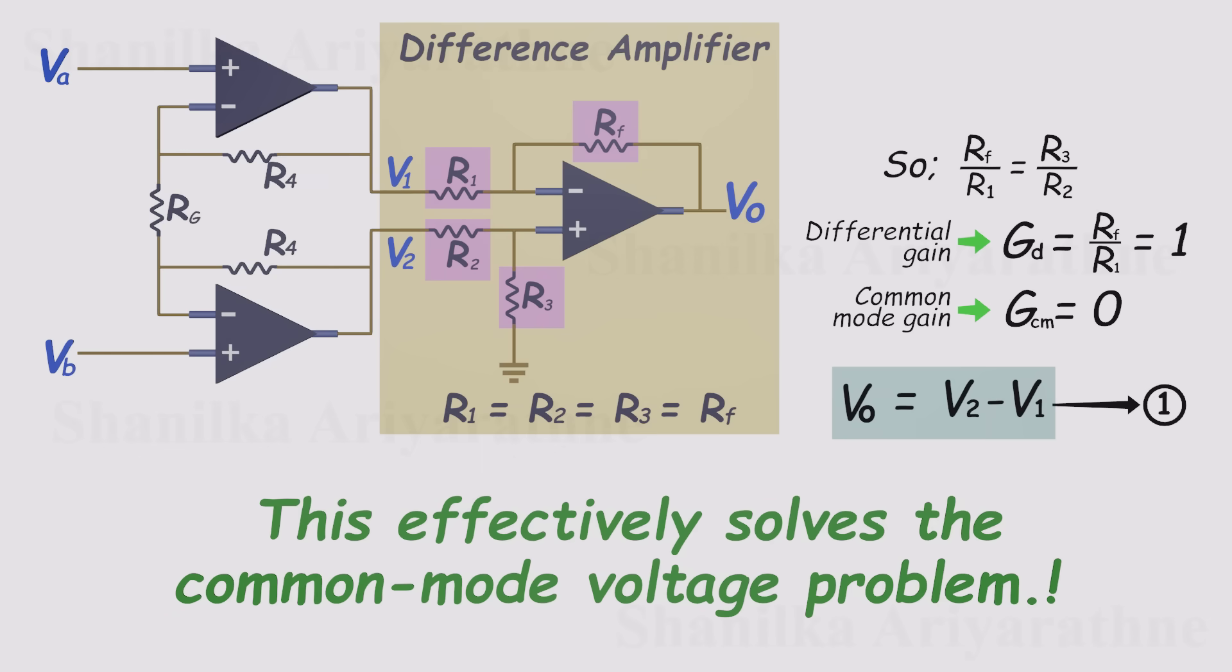The real advantage here is precision. In commercial instrumentation amplifier ICs, the resistors are laser trimmed, so their values match almost perfectly. That kind of accuracy is nearly impossible to achieve if we try to build a differential amplifier ourselves using ordinary resistors.